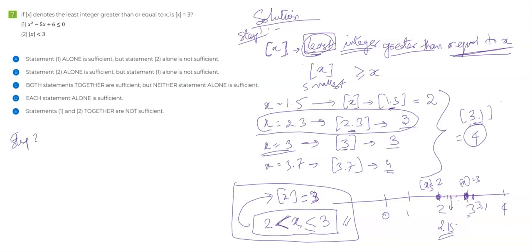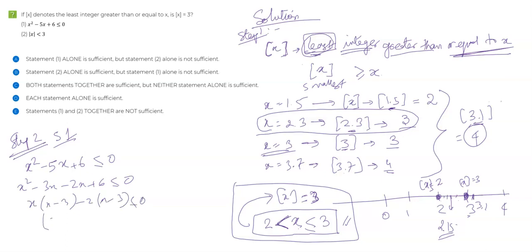Let's look at Statement 1: x² - 5x + 6 ≤ 0. Notice you have a quadratic inequality here. In GMAT, most cases whenever you have a quadratic inequality you can factorize it and break it into two different factors. You can write it as x² - 3x - 2x + 6 ≤ 0, or x(x - 3) - 2(x - 3) ≤ 0, which gives you (x - 3)(x - 2) ≤ 0.